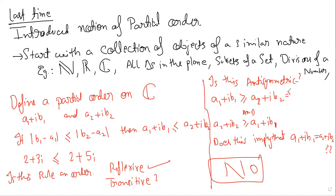Can you give an example? Yes — take something like 3+4i and another complex number. You can check that because the difference between the real and imaginary parts are the same, they satisfy both inequalities but are not equal. So it's not an order — they are not the same.